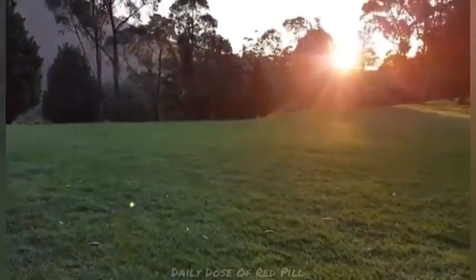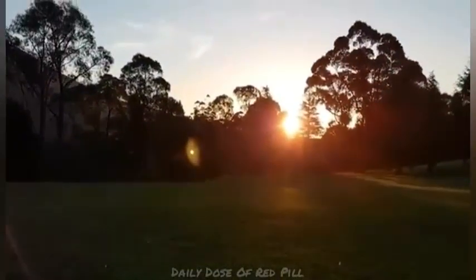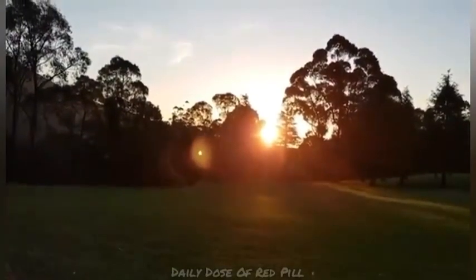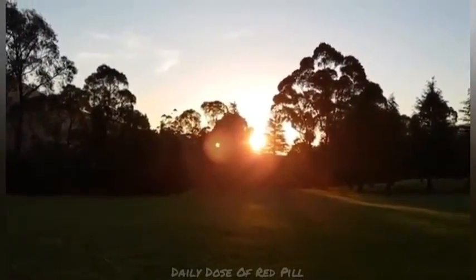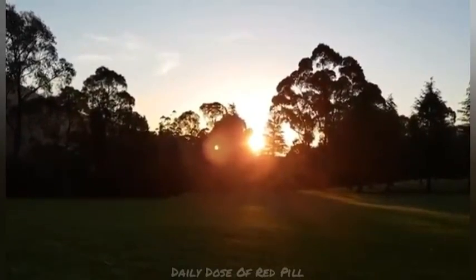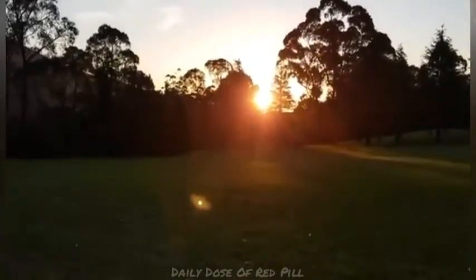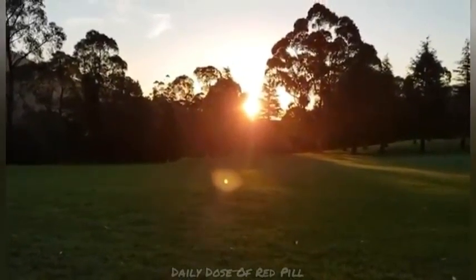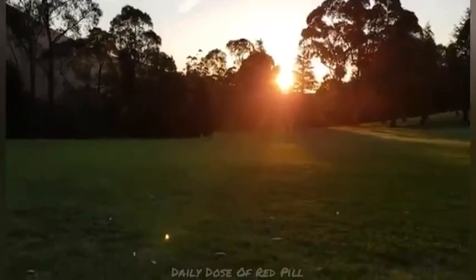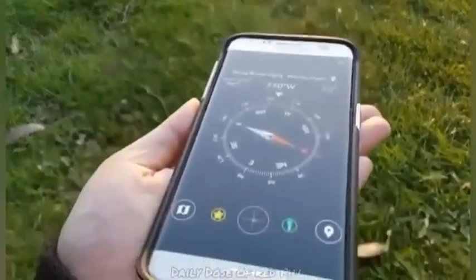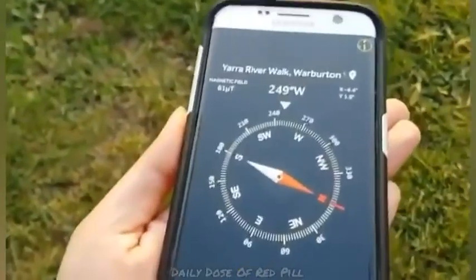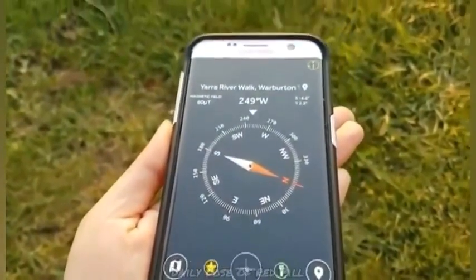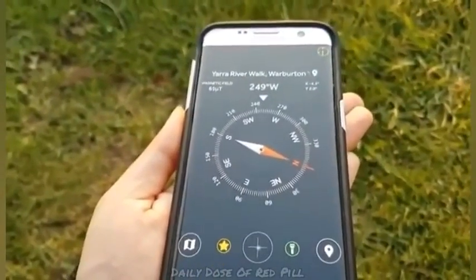Hey guys, this is Alex. I'm in Warburton, which is just east of Melbourne, about an hour east of Melbourne in Australia. We're about 37 degrees latitude south. Today's the 15th of October 2017, and I thought you might be interested in seeing this. So here I've got a compass pointing directly at the sun, and it's showing that the sun is currently going down at about 249 degrees west.